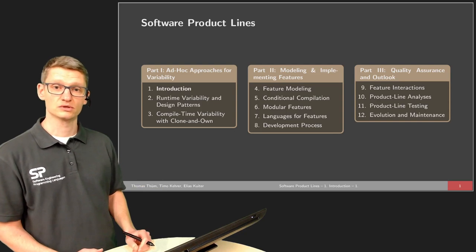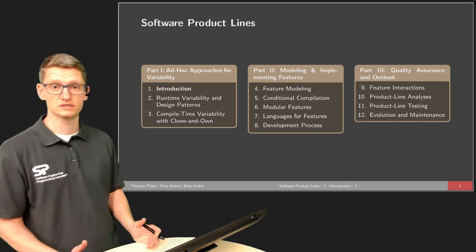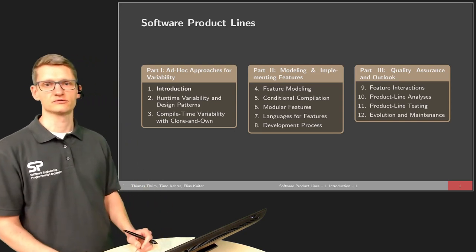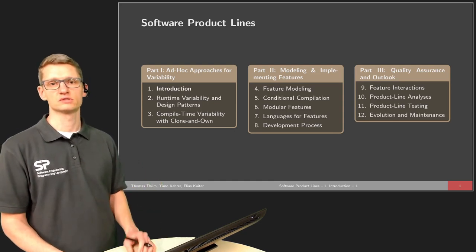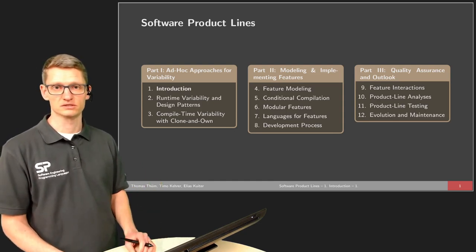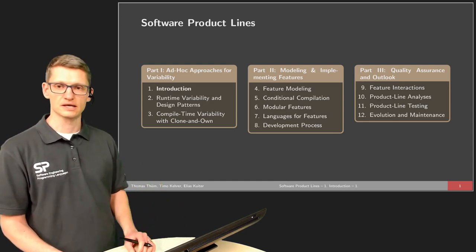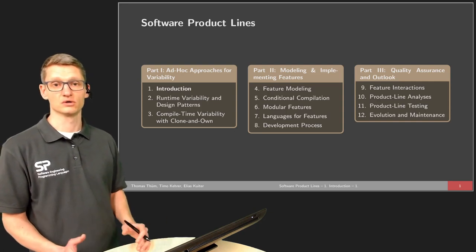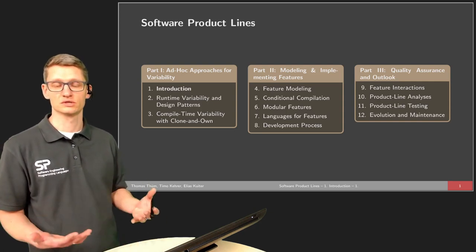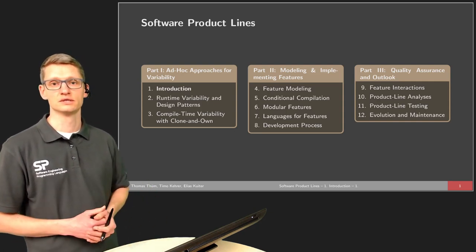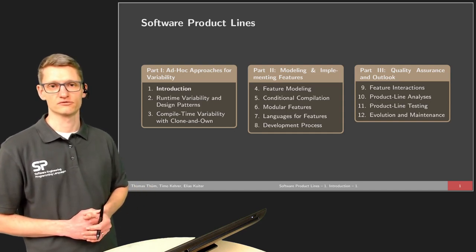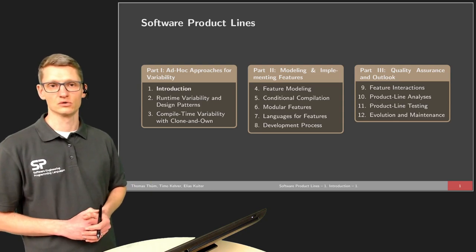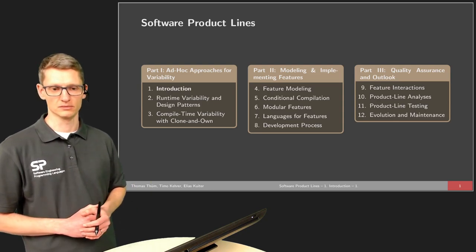In the second part, we will look in more detail — this is the core part of the lecture — at how to model the valid combinations of features, but also how to implement Software Product Lines. In the last part, we will talk about quality assurance, how to ensure that quality reaches a sufficient level. We also give some outlook on other topics like evolution and maintenance.